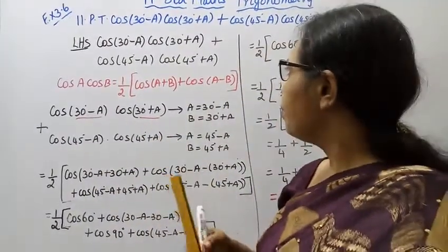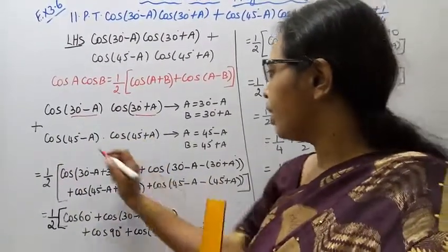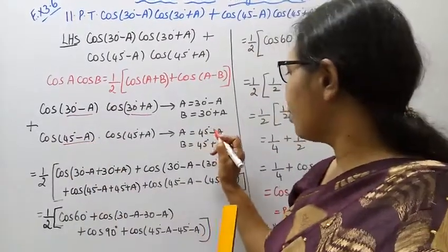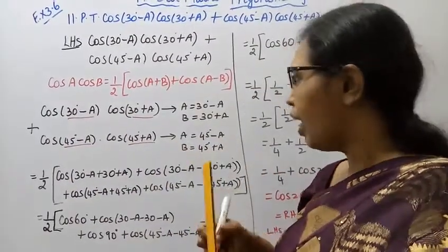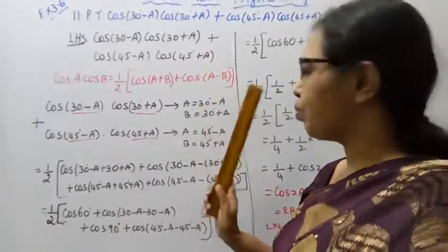Plus cos 45 degree minus A into cos 45 degree plus A. A is 45 degree minus A, B is 45 degree plus A. We substitute A and B in the identity.